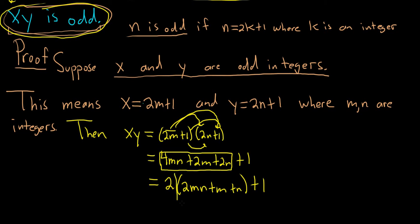So this piece here is an integer, so this is equal to 2, let's just say k plus 1, where we can re-identify our k as 2mn plus m plus n is an integer.